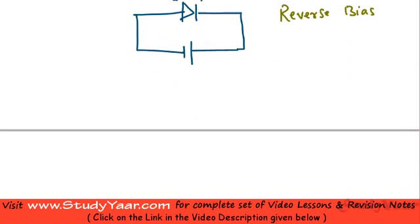Under forward bias conditions, your diode basically acts like a short circuit. So if you have a diode which is connected in this manner, then this acts like a short circuit.